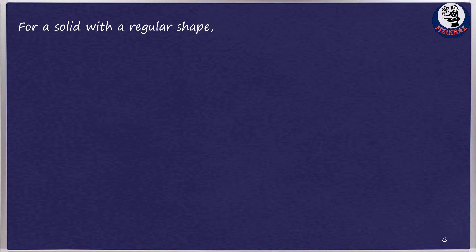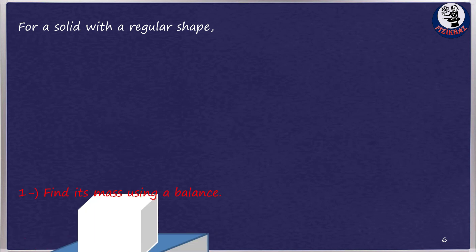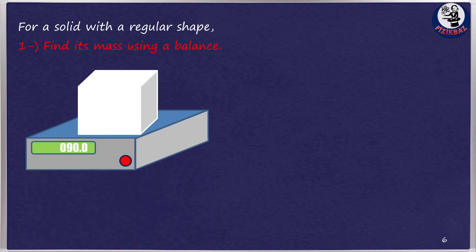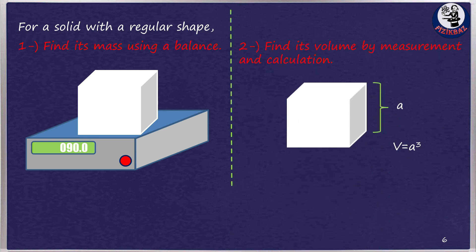For a regularly shaped solid, the mass is found on a balance and the volume by measuring its dimensions with a ruler. The example here shows a cube. As you know, if you measure an edge of the cube, you can calculate the density using our formula.